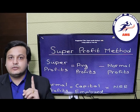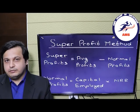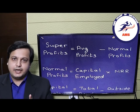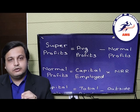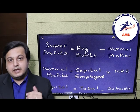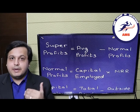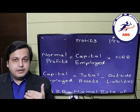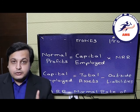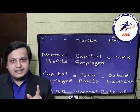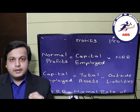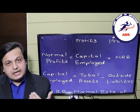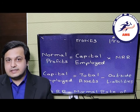In order to calculate the super profits, you first need to calculate the normal profits. Normal profits are calculated as capital employed by the company multiplied by the NRR — the normal rate of return, which in our example is 10%. In many questions you will be given the capital employed; in others you will need to calculate it. Capital employed equals total assets excluding goodwill, minus all outside liabilities, that is borrowed funds. This is also called the net assets of the company.